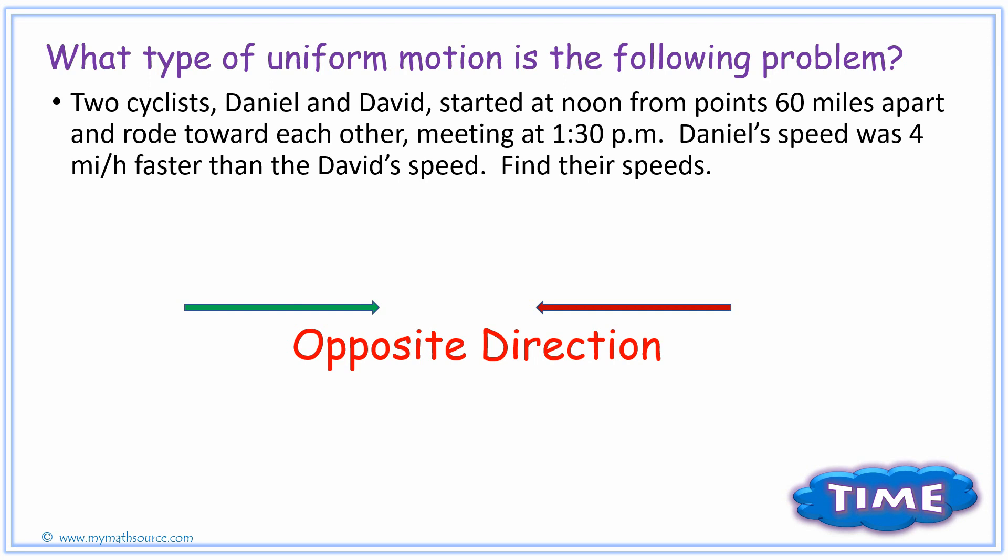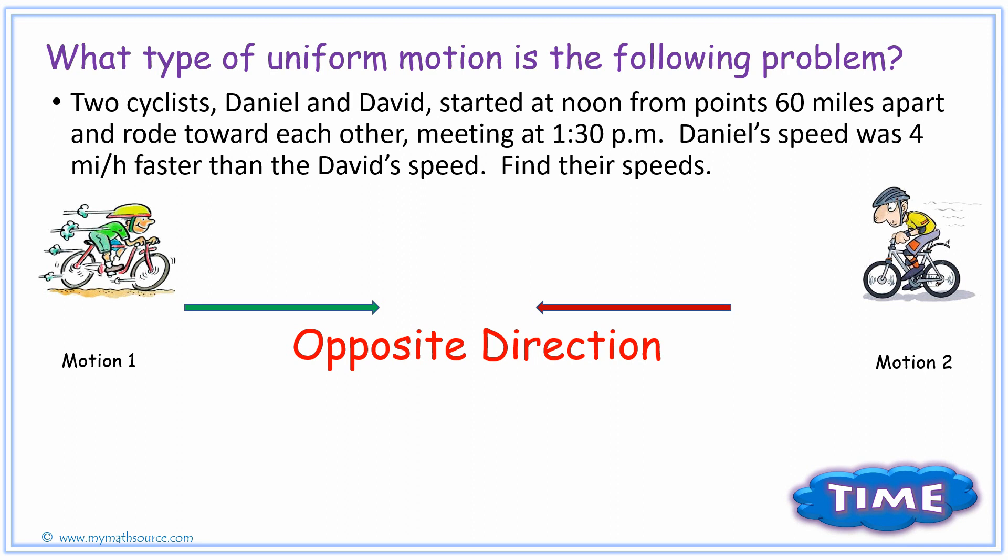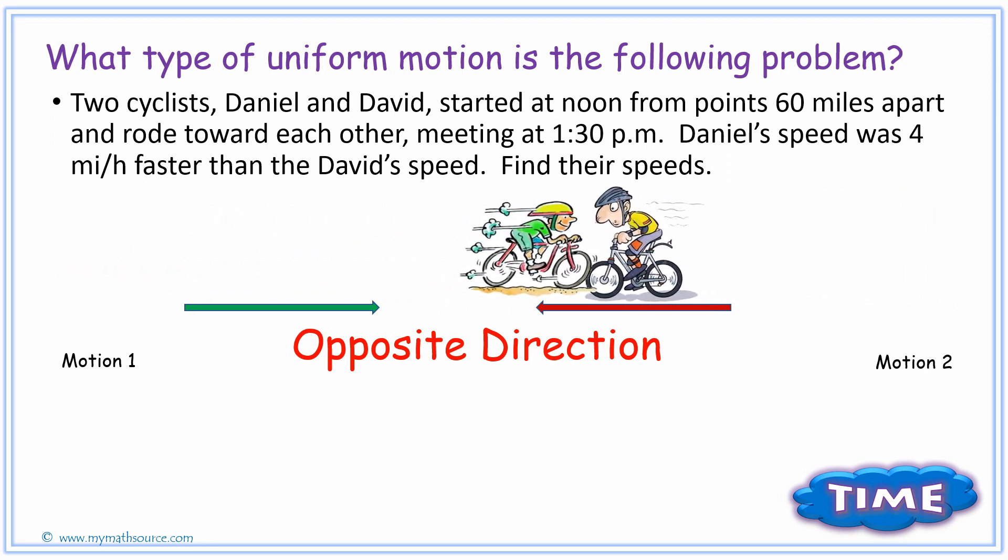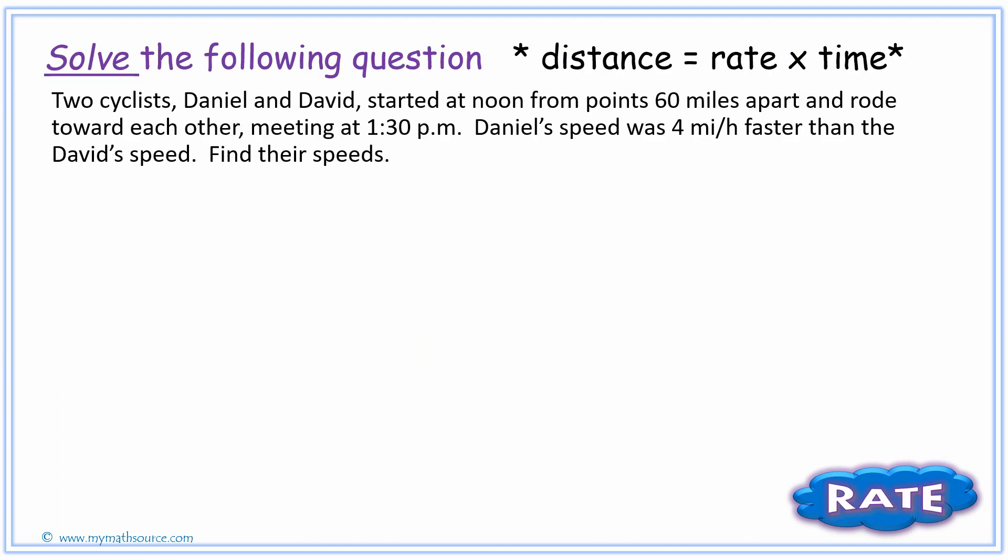The first motion and the second motion look similar to this, and the reason why motion one is faster is because Daniel is traveling at a speed that is faster than David's, four miles per hour faster. The way that we're going to go about doing this is first to state the type of motion and draw a sketch. We've already done that: opposite direction, and we want to have a sketch.